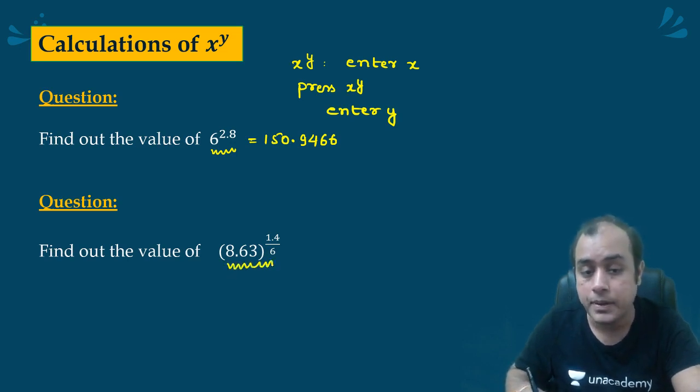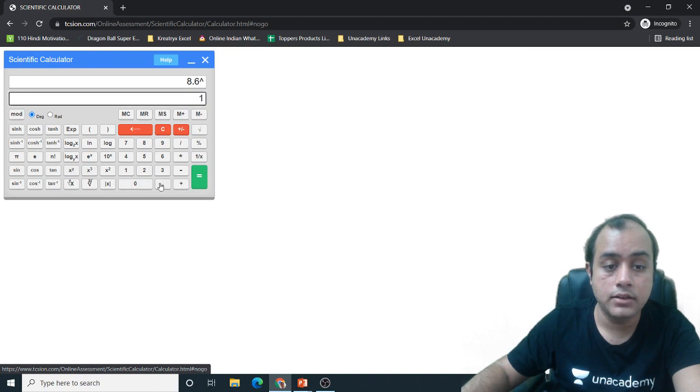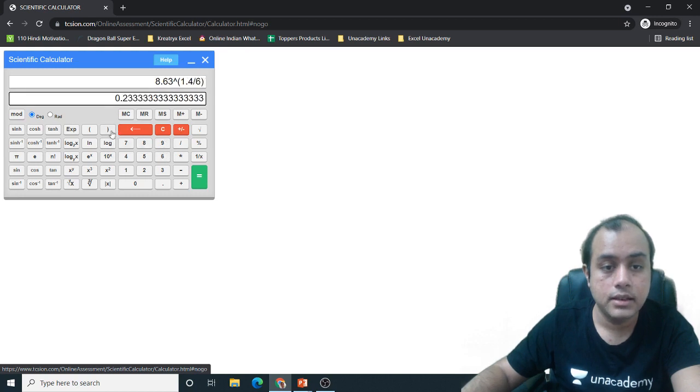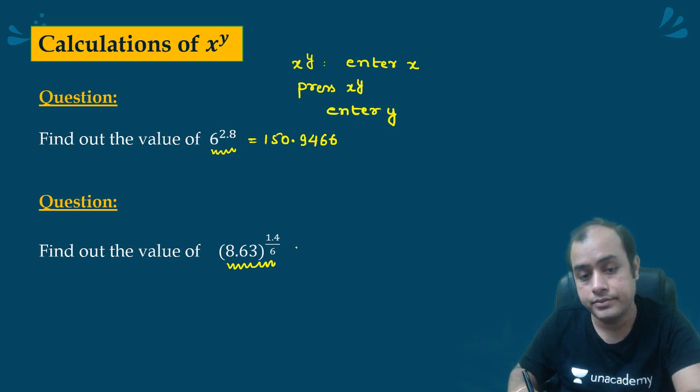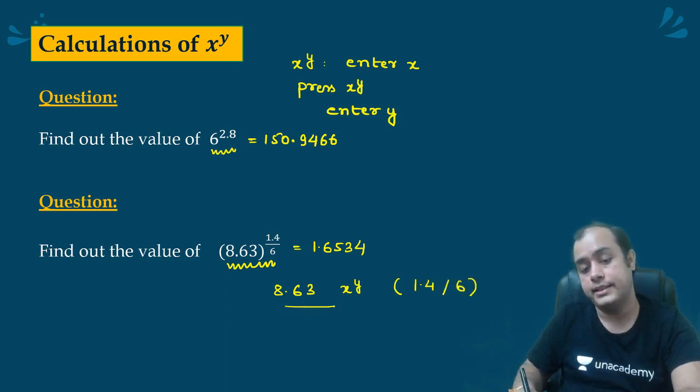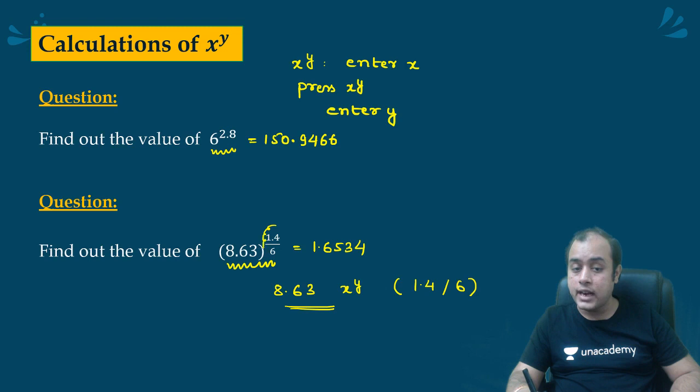Next is 8.63 to the power 1.4 by 6. So I will write 8.63 to the power 1.4 by 6. Let me clear it, 8.4. What it was? 8.63 to the power 1.4 bracket I will use by 6. Better make use of bracket. 1.6534. So what I did is 8.63, then x to the power y, then bracket, then 1.4 by 6, bracket close. Like this. So bracket indicates that this calculation has to be performed first. So first I need to figure out the value of 1.4 by 6 and then only I can raise 8.63 to that power.